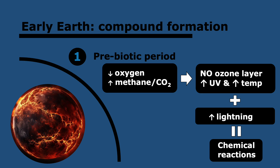A lot of this is theory because obviously no one was there to witness it. But the two main factors believed to have caused chemical reactions and compound formation are UV and lightning. Once living organisms existed, they would have raised the concentration of oxygen in the atmosphere and reduced the concentration of methane and CO₂.